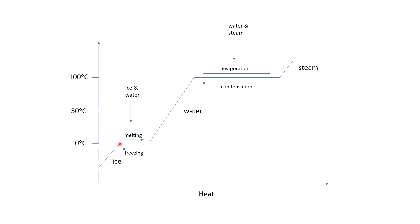At the melting point, if we continue to add heat, our ice is melting and we have both ice and water present. On a molecular level, those water molecules are starting to be able to move past each other — they are no longer fixed in place as they melt and turn into liquid water, so there is more movement of the water molecules.